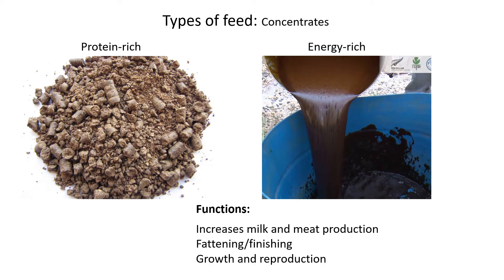Finishing refers to the stage just before slaughter — the animal has grown to its full length and the idea is just to get it fat enough to add more weight, since a better weight means a better price for cattle. Lastly, concentrates are there for growth and reproduction, as protein is very good for growth in young animals and is needed for reproduction, with energy also helping.